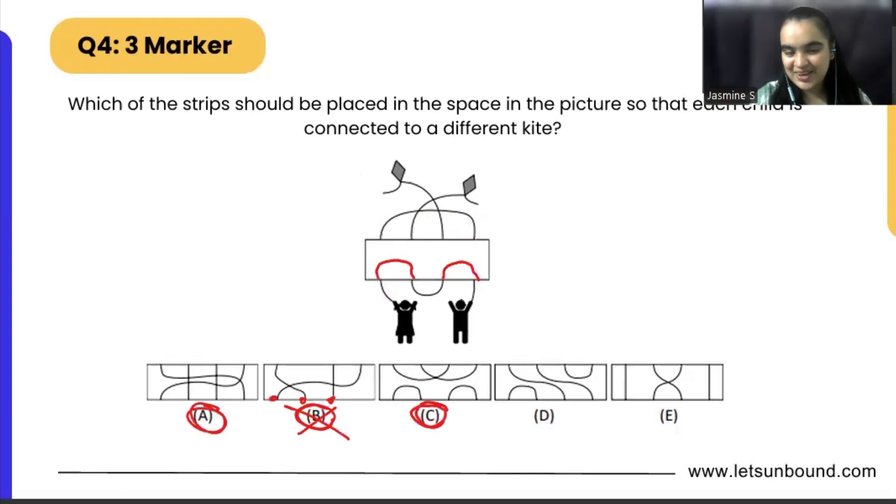So the C part, let's see. If we will make only the bottom part we can see it is going like this, it is not reaching to the kites only, right. So this is also not correct. Let's see the D part.